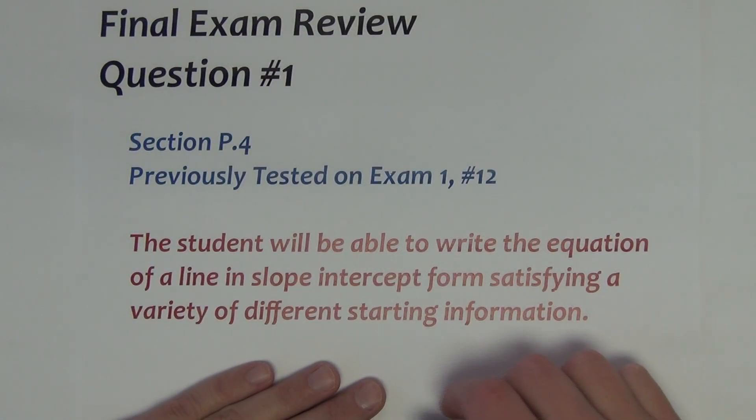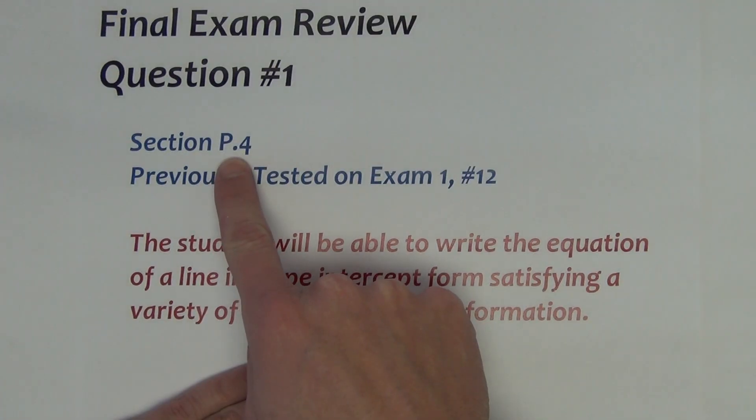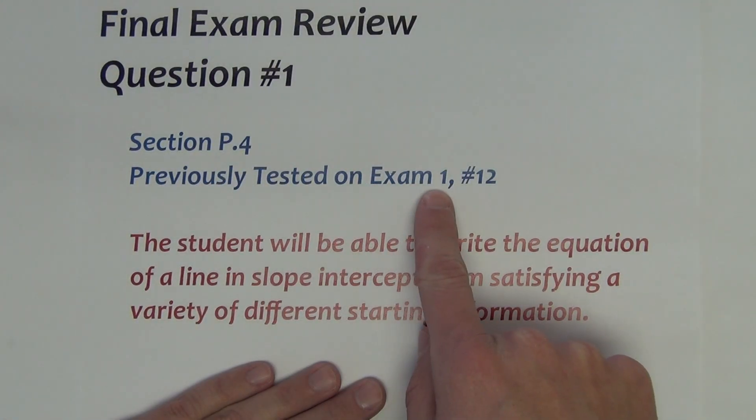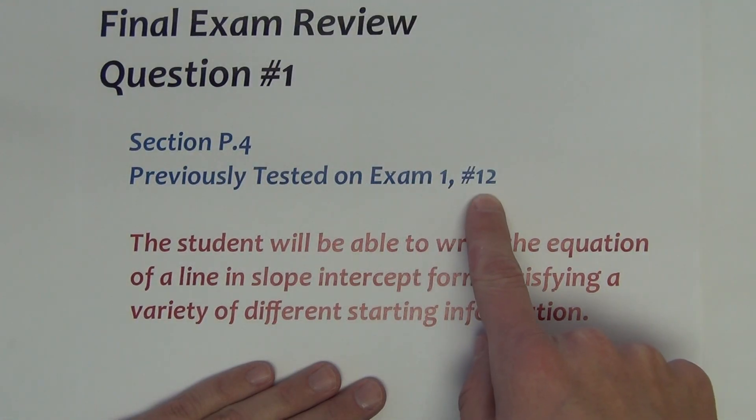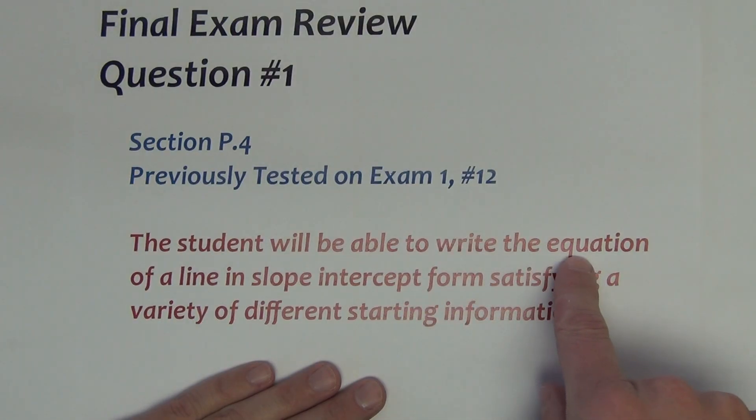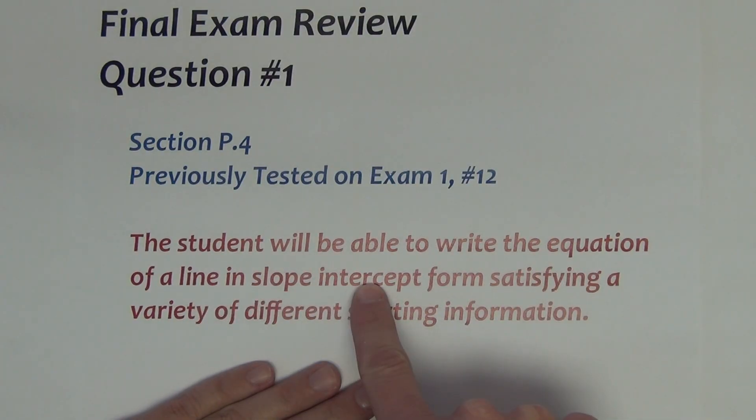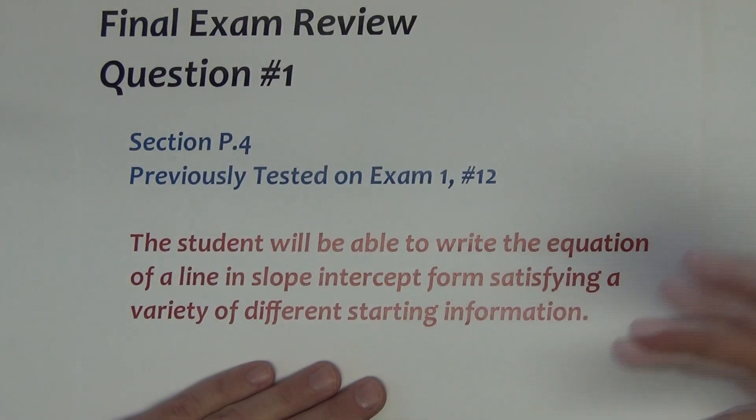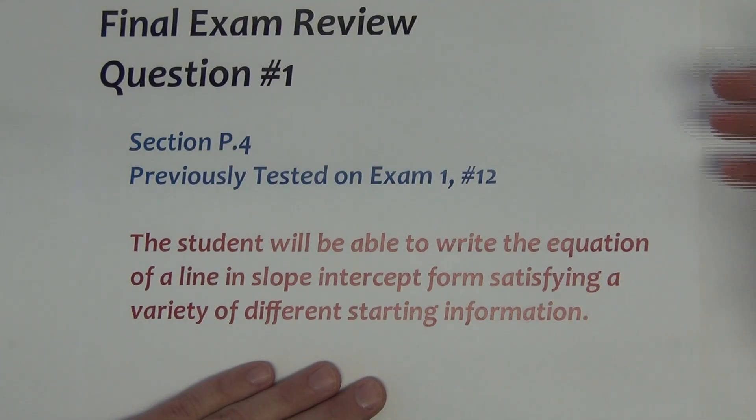Question number one on this year's final exam comes from section P.4. It was previously tested on our first exam, question number 12, and has to do with being able to write the equation of a line in slope-intercept form from a variety of different starting information.